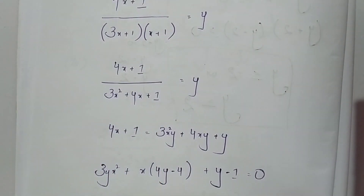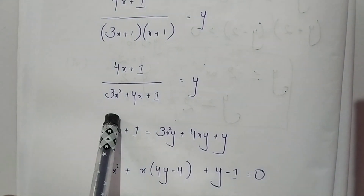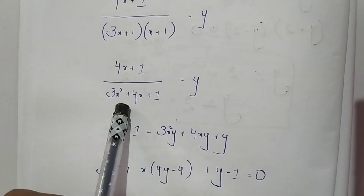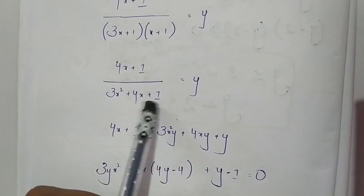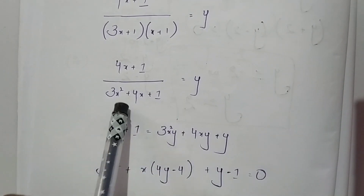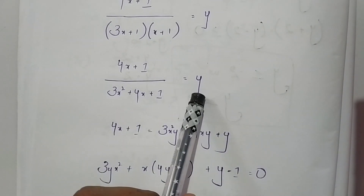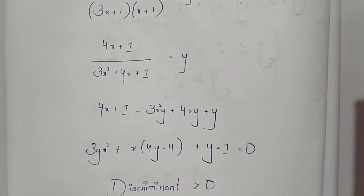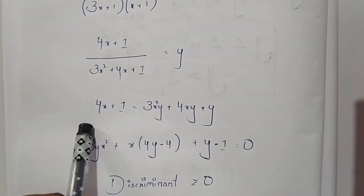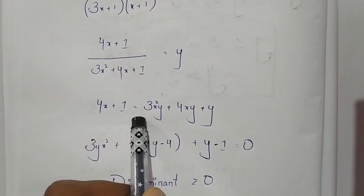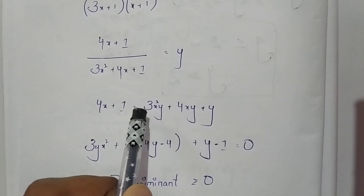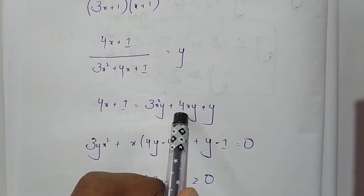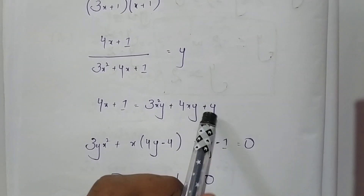So 4x + 1, divided by — on multiplying these two terms in the denominator we will get 3x² + 4x + 1 — is equal to y. On sending this term to the right-hand side we will get 4x + 1 = 3x²y + 4xy + y.